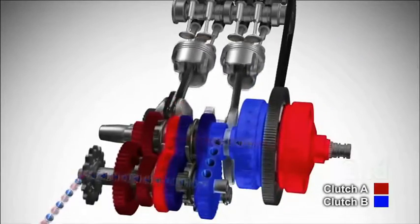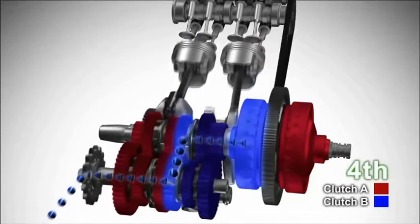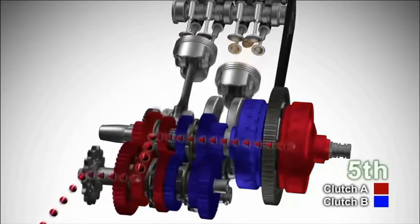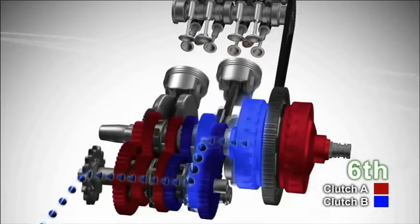As the two clutches engage and disengage in sequence, progressing through all six gears, the bike picks up speed in a continuous smooth manner with no hesitation as the rider winds on the throttle.